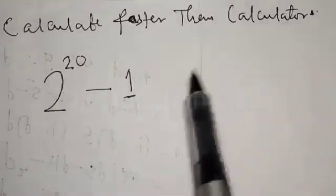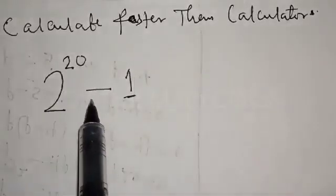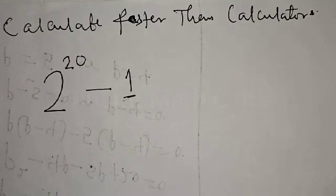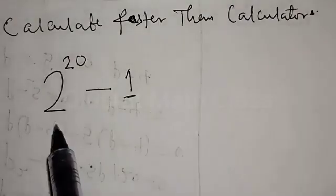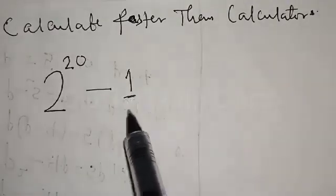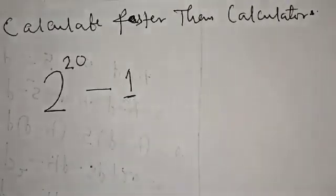Calculate faster than a calculator: 2 raised to power 20 minus one. Hi everyone, welcome to my class. In this class, we want to look at how we can easily calculate 2 raised to power 20 minus one without using a calculator.